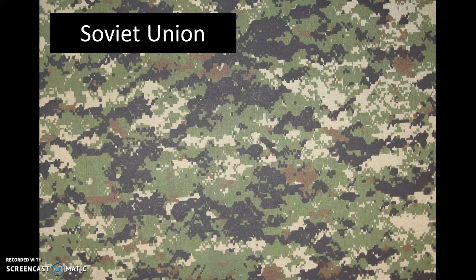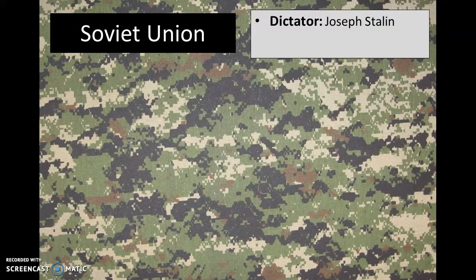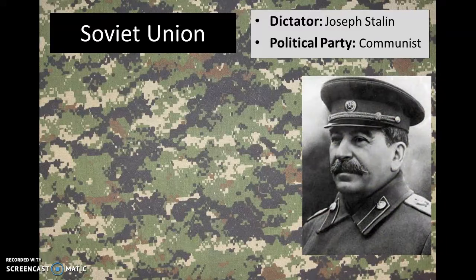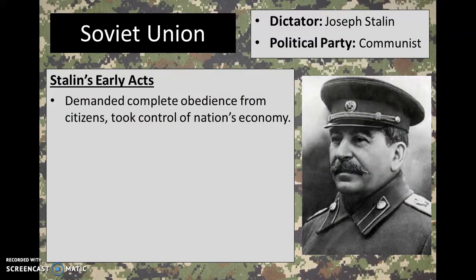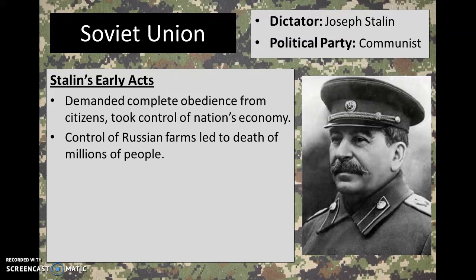Another country where we saw a dictator rise to power was the Soviet Union. The name of the dictator there was Joseph Stalin, and he was part of the Communist Party. When he was in power, he demanded obedience from every citizen. He took control of the nation's economy and took over all of the Russian farms. This eventually led to the death of millions of people because he would take the crops from these farms to sell them rather than allowing his Russian citizens to eat them. When Russian farms told Stalin they didn't have as much product as he expected, he wouldn't believe them and took what he wanted, leaving very little food for his citizens.